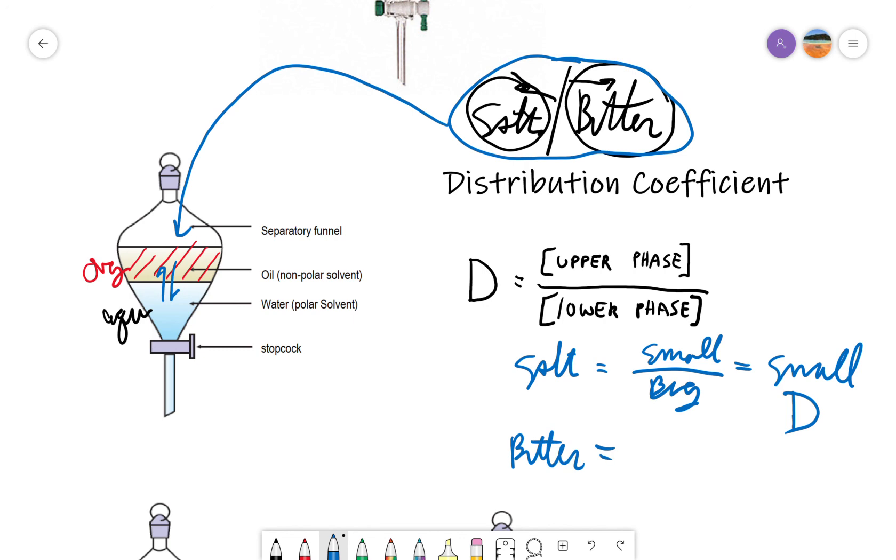The butter, on the other hand, would be very soluble in an organic phase, and not very soluble in an aqueous phase. So we would have two distinctly different distribution coefficients.